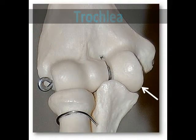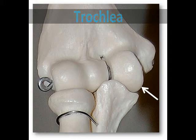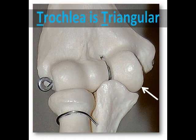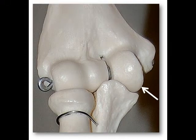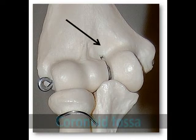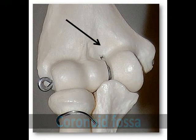The trochlea is a spool-shaped process located medial to the capitulum. The trochlea has a more triangular shape and is more pointed, not curved like the capitulum. It articulates with the trochlear notch of the ulna. The coronoid fossa is an anterior depression that articulates with the coronoid process of the ulna during flexion of the forearm.